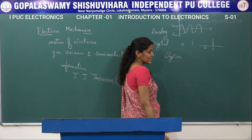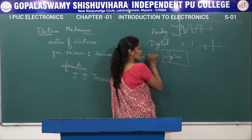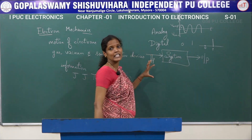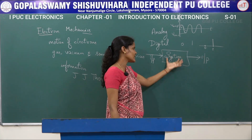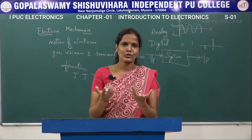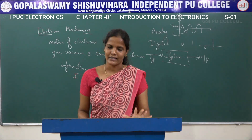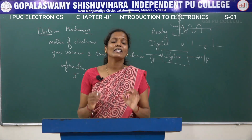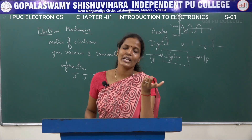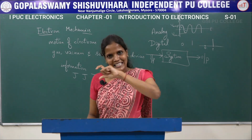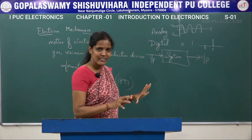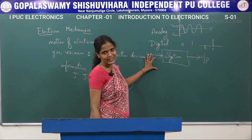What is an analog or digital system? It is a simple device in which we give some input and obtain some output. A computer, a mobile phone, a radio, or a television can all be considered a system. For a television, when we give an AC supply, it produces an audio signal and a video signal as output. So any device that produces an output when an input is given is called a system.